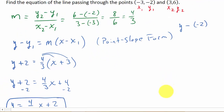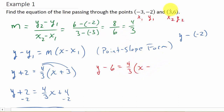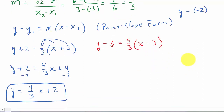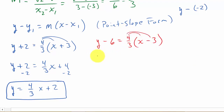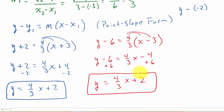Now let's work the same problem using the other point, 3, 6. Plugging into point-slope form: y minus 6 equals 4 thirds times x minus 3. Distributing the 4 thirds gives y minus 6 equals 4 thirds x minus 4. Adding 6 to both sides gives y equals 4 thirds x plus 2. You can see that no matter which point you use for the point-slope form, you get the same answer either way.